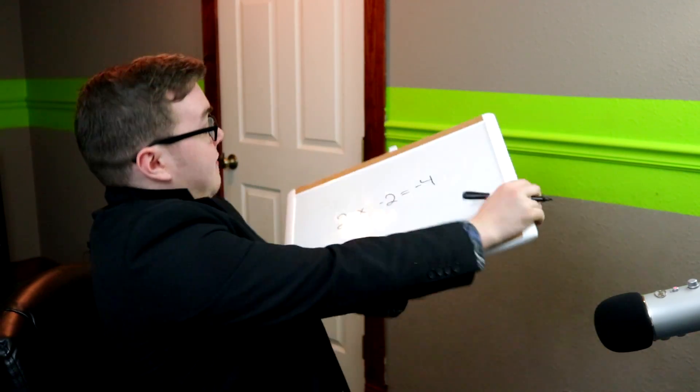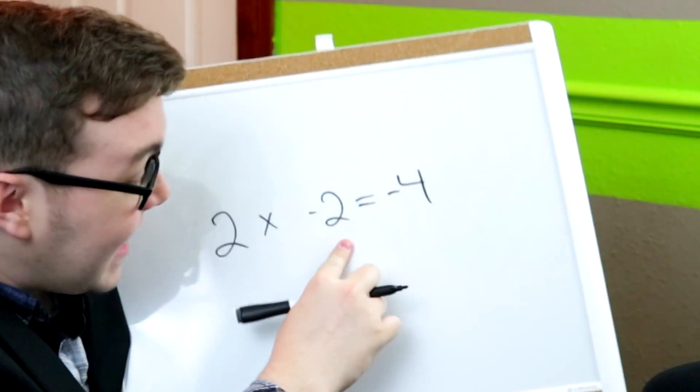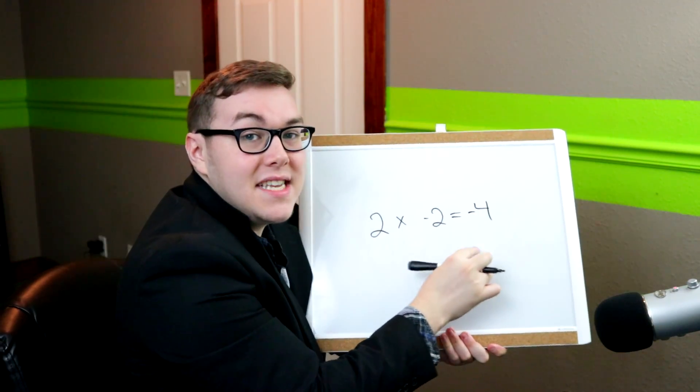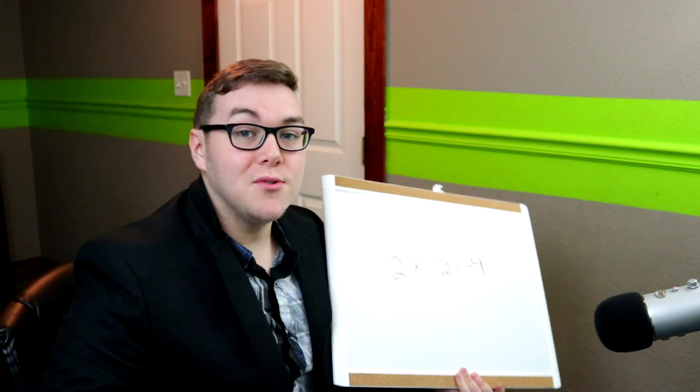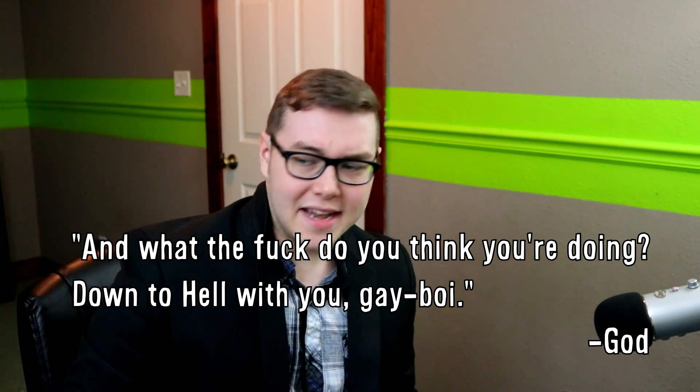Now when you have an equation like what I have right here, where a straight man has kissed a gay man, you get negative sex points. Negative sex points results in something called an AND-gasm. The AND in AND-gasm is actually shorthand for what God will say when you get to heaven, which is "and what the fuck do you think you're doing? Down to hell with you, gay boy." Balls and sex points are required to have an orgasm.